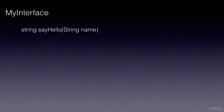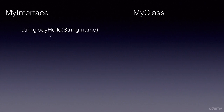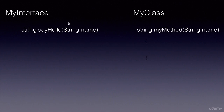For example, here I have a functional interface with one single method called sayHello that takes a string and returns a string as well. We can then express this functional interface using a lambda expression, or within our class, we can define a method which takes the same argument and implement that method.